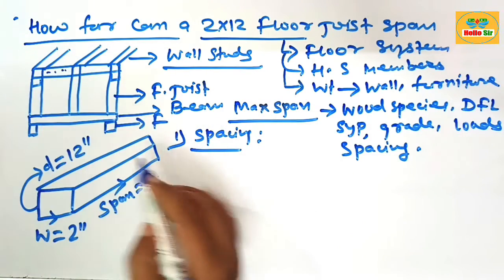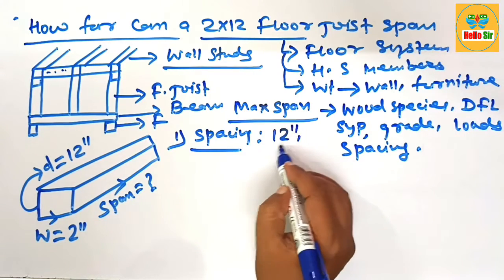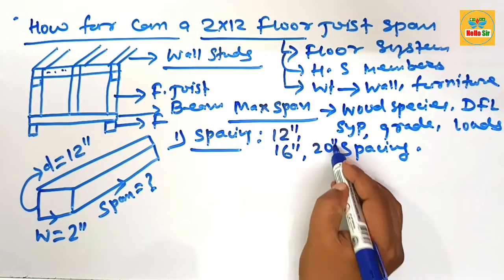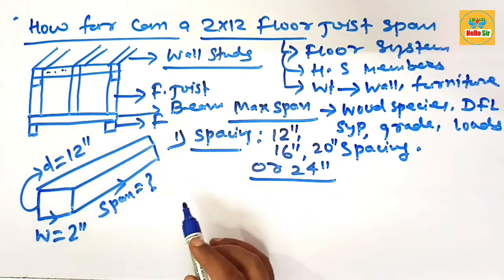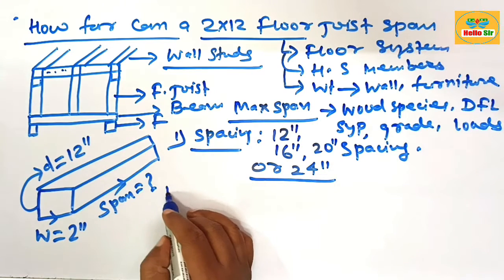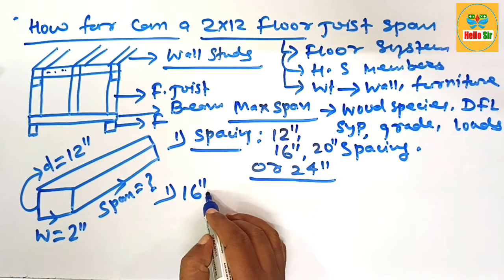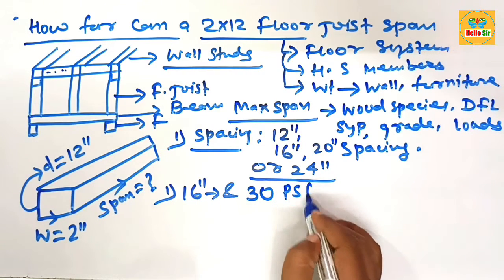The spacing between the two floor joists includes 12 inches, 16 inches, 20 inches, or 24 inches. This is common spacing. The standard spacing between floor joists is 16 inches and 30 psf live load.